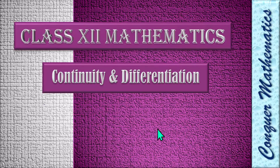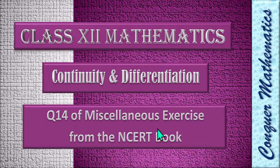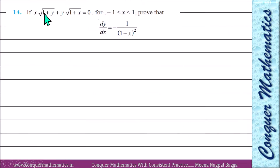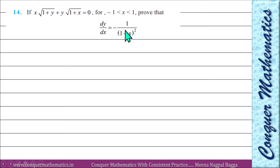How are you, 12th question? Ab hum discuss karne lagay hain 14th question — Exercise of 5th chapter. Question kya hai? If x√(1+y) + y√(1+x) = 0, where x lies between minus 1 and 1, then prove that dy/dx equals a certain expression. Toh is implicit function ke expression se aapne dy/dx calculate karna hai.